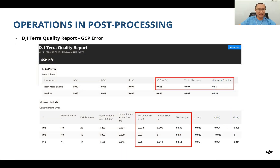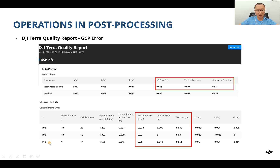In the quality report, a GCP error report is provided for reference. It shows a summary of the GCP error including RMSE, 3D error, vertical error, and horizontal error, along with detailed information for each individual GCP — for example, GCP 102, 108, and 110 — showing each one's detailed accuracy situation.